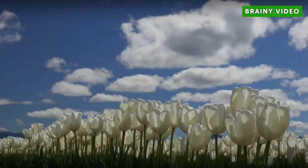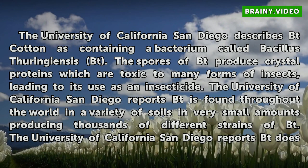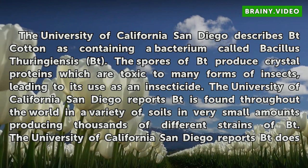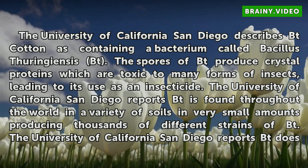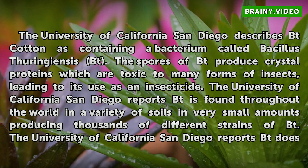Bacterium. The University of California San Diego describes Bt cotton as containing a bacterium called Bacillus thuringiensis, or Bt. The spores of Bt produce crystal proteins which are toxic to many forms of insects, leading to its use as an insecticide. The University of California San Diego reports Bt is found throughout the world in a variety of soils in very small amounts, producing thousands of different strains of Bt.